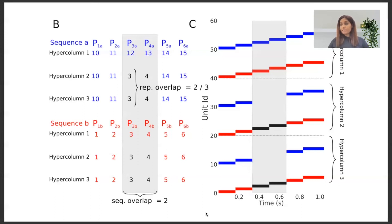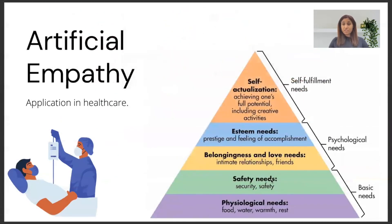That's it about the overlapping of sequences. And other than computational neuroscience aspects, I also wanted to very quickly discuss another very important concept, which is artificial empathy.